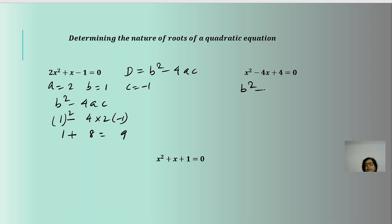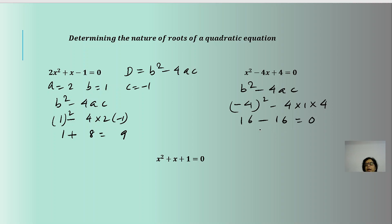In this case, b² - 4ac = (-4)² - 4(1)(4) = 16 - 16 = 0. Hence, we get two real and equal roots.